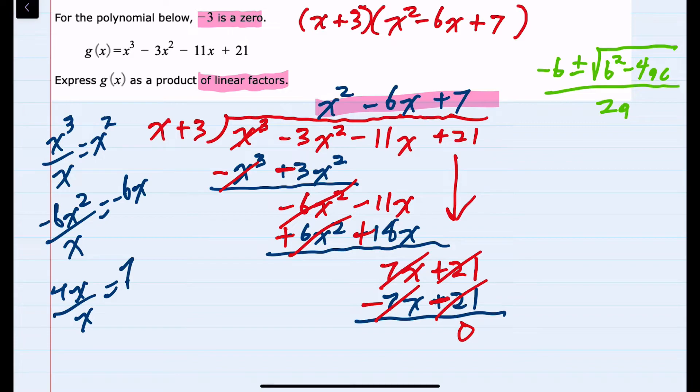So with those substitutions, negative b would be the opposite of negative 6, so a positive 6 plus or minus the square root of b². b is again negative 6, but when we square it we would have a positive 36 minus 4 times a, which is 1, times c, which is 7, all over 2 times a, which again is 1.